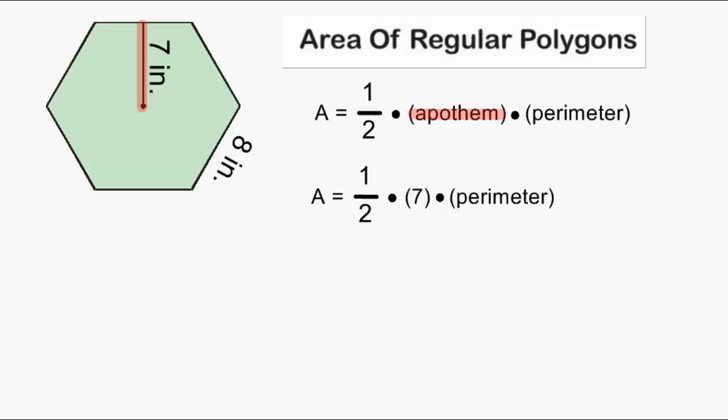Next we have to figure out what the perimeter of our regular hexagon is. Because a regular hexagon has 6 sides that are equal in length and we already know that one of our sides is 8 inches, all we have to do is multiply 6 by 8, which would give us a perimeter of 48 inches.